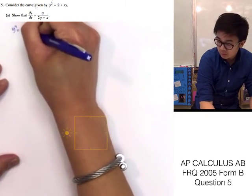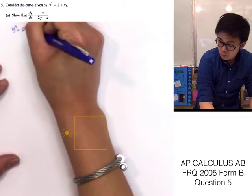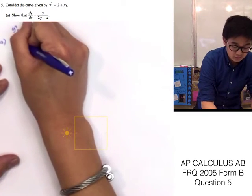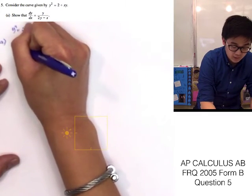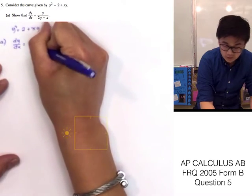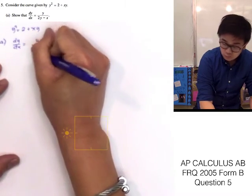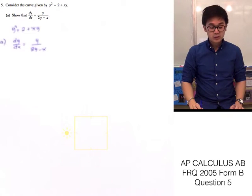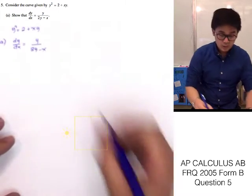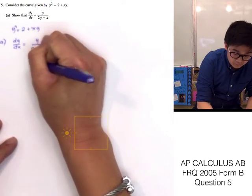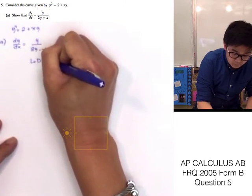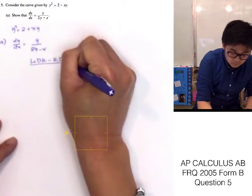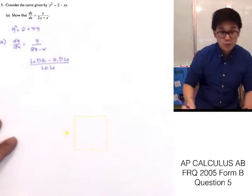y squared is equal to 2 plus xy. On the first question, we are supposed to show that the derivative of this curve, dy/dx, is equal to y all over 2y minus x. To find the derivative of this function, we need to use implicit differentiation — low d high minus high d low, all over low squared.